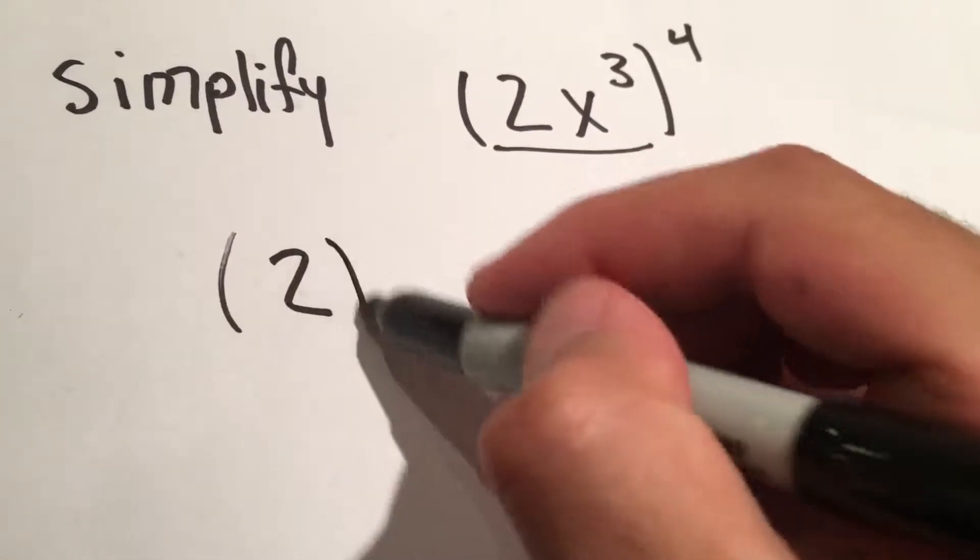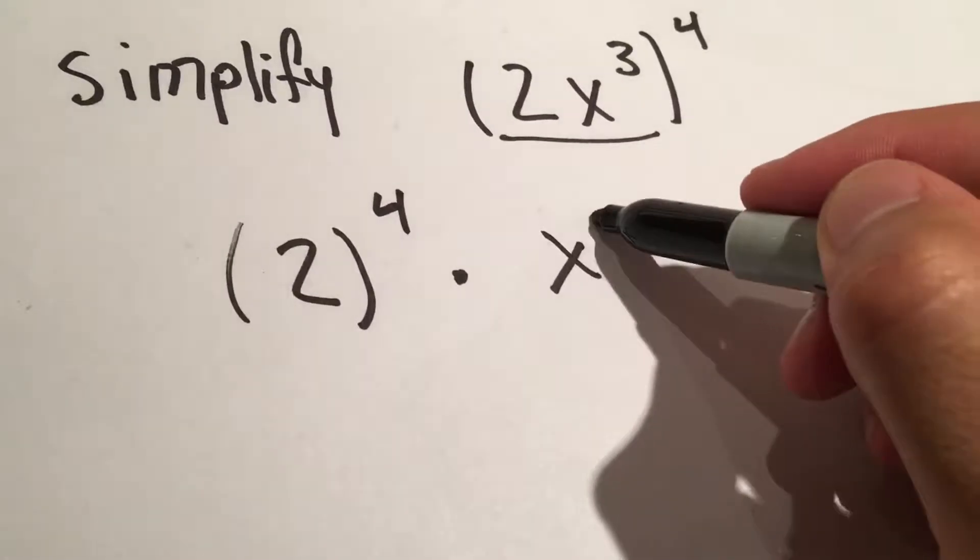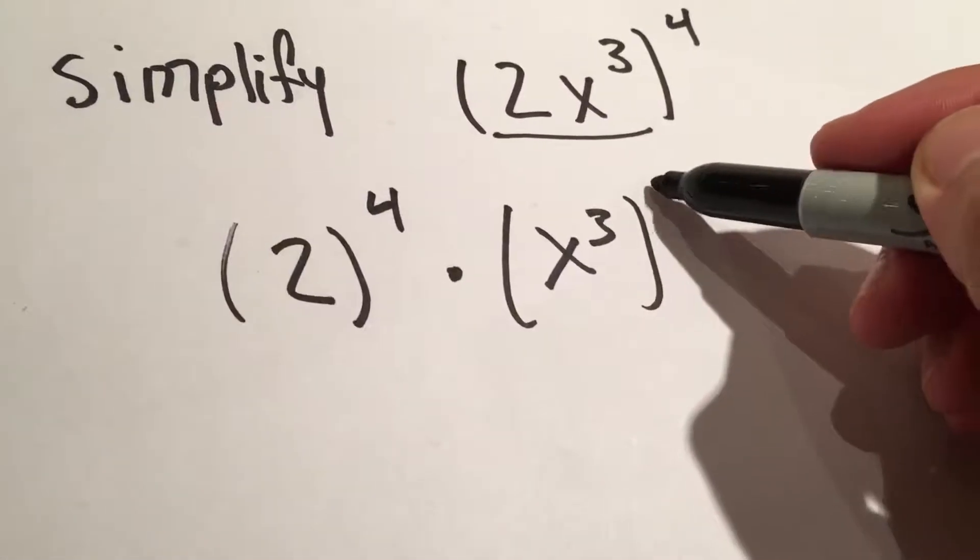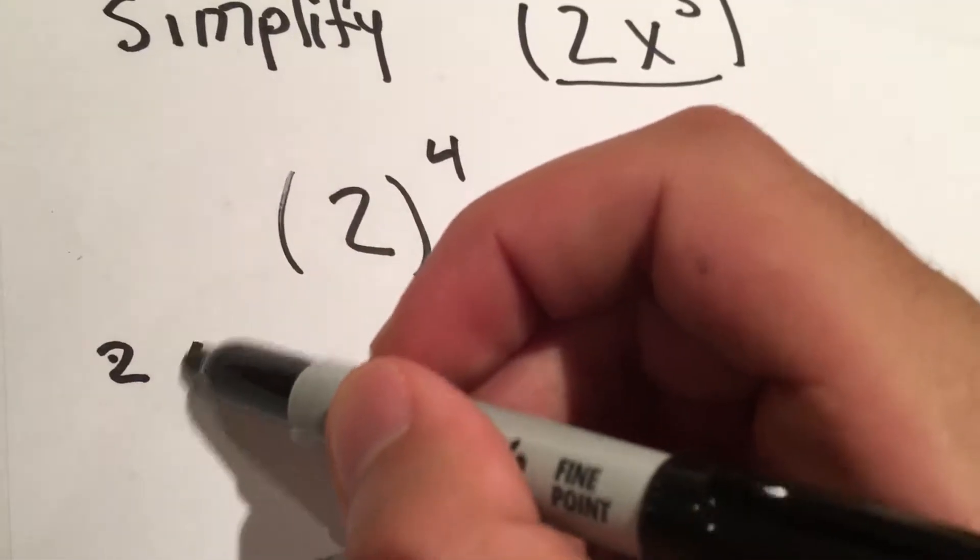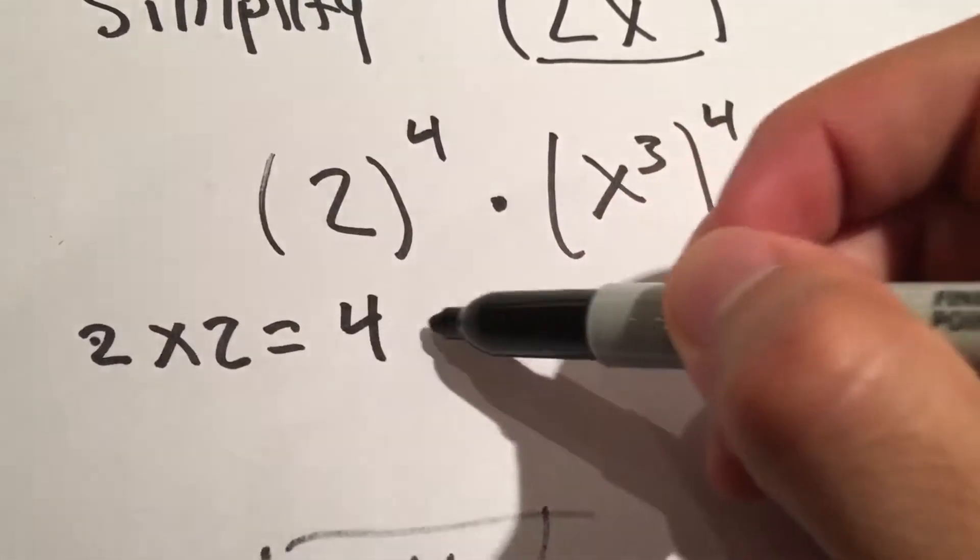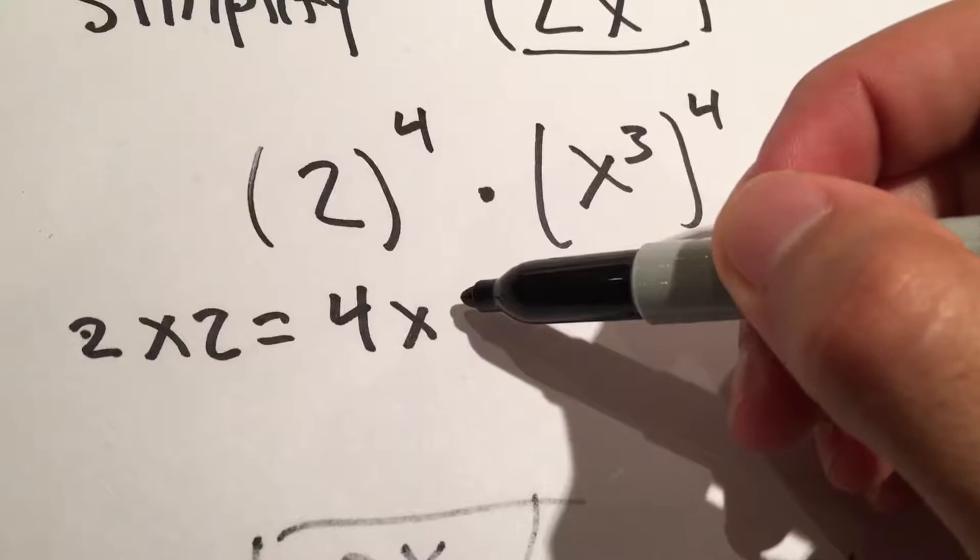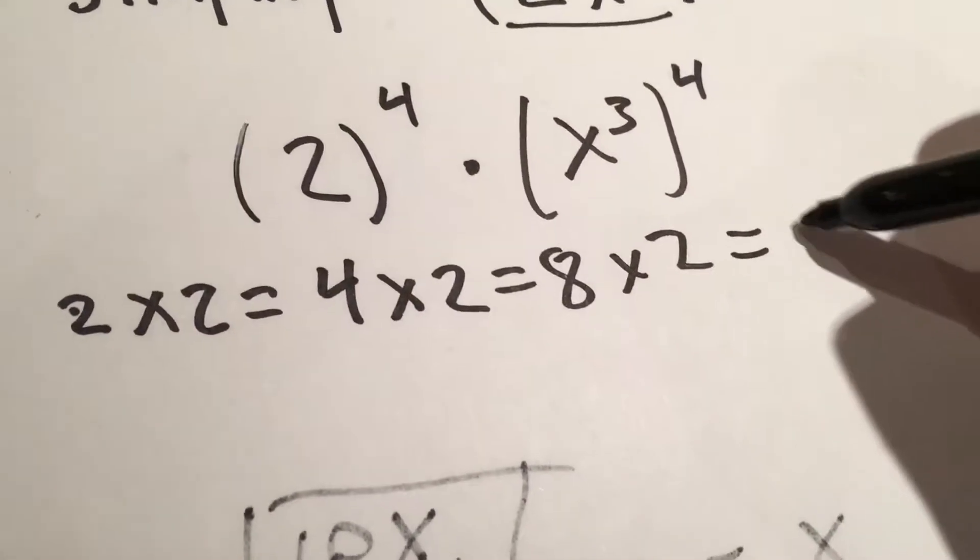So we're doing 2 to the fourth times x cubed also to the fourth. 2 times 2 equals 4, times 2 equals 8, times 2 equals 16.